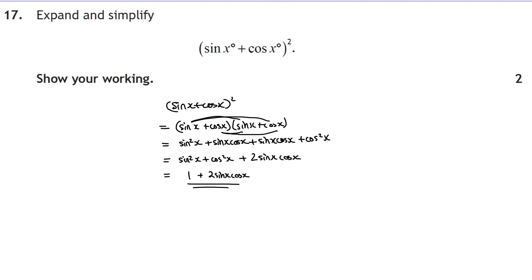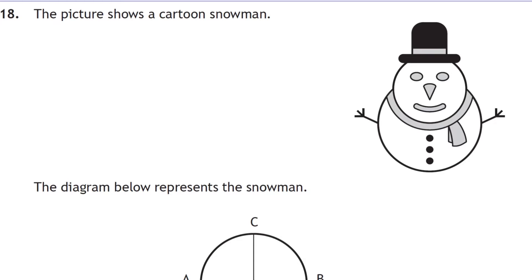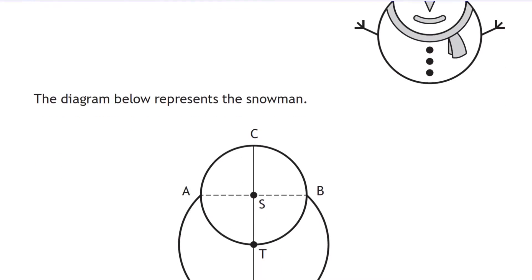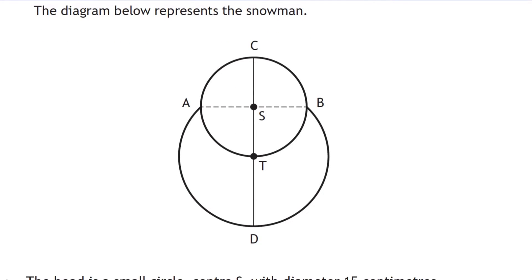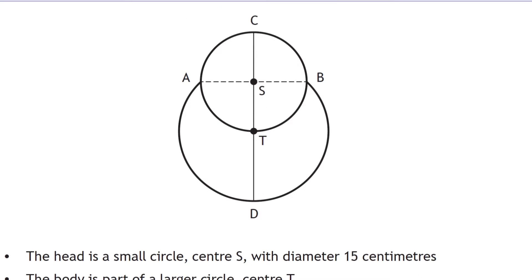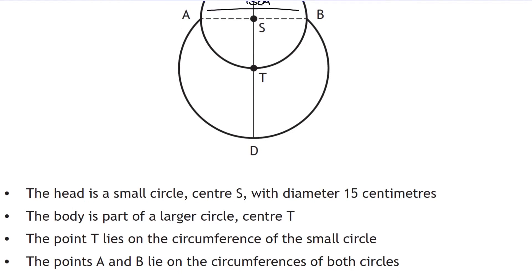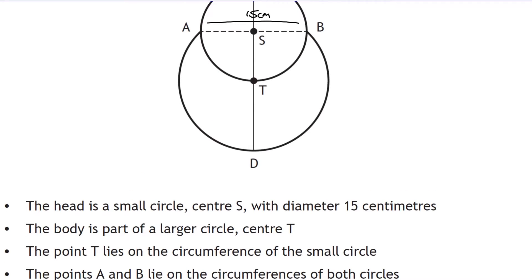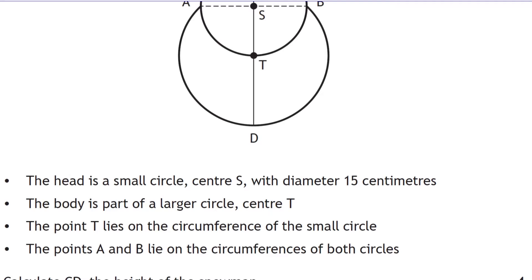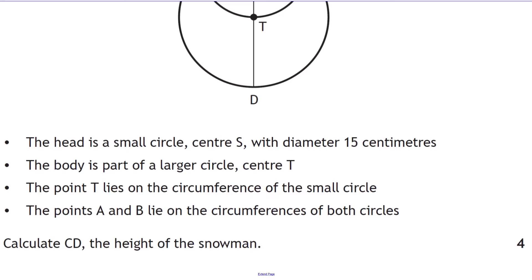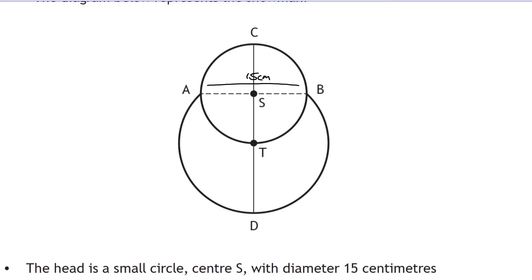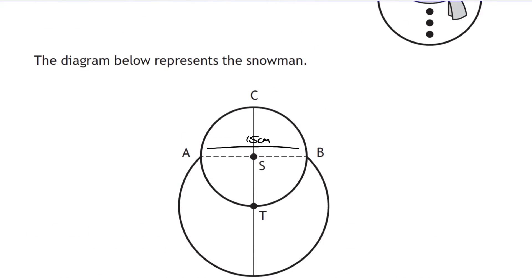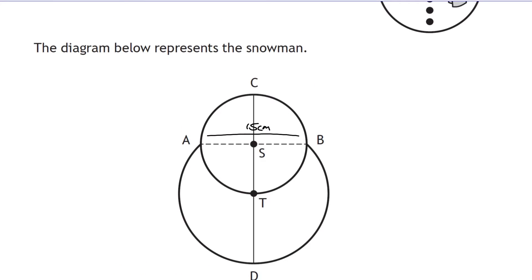Question eighteen uses a snowman diagram: two circles where the head is a small circle with diameter 15 cm, and the body is a larger circle. Point T lies on the circumference of the small circle and is the centre of the larger circle. We need to find the total height CD. We'll need to construct a right-angle triangle.